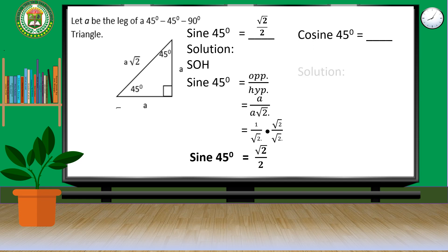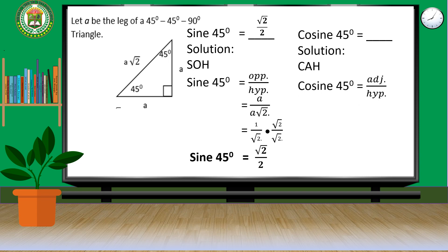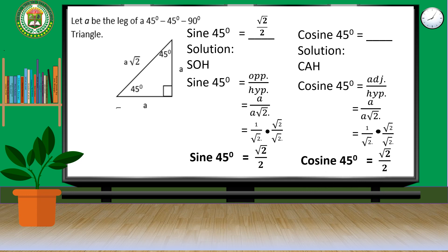For cosine 45 degrees, we use 'Ka': cosine 45 degrees equals adjacent over hypotenuse. Substituting adjacent A over hypotenuse A square root of 2, simplify to 1 over square root of 2. Rationalizing by multiplying by square root of 2 over square root of 2, cosine 45 degrees equals square root of 2 over 2.